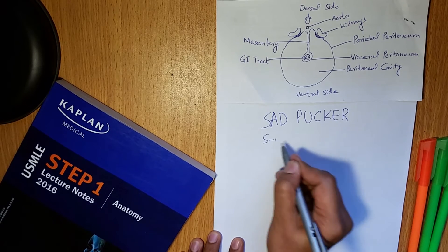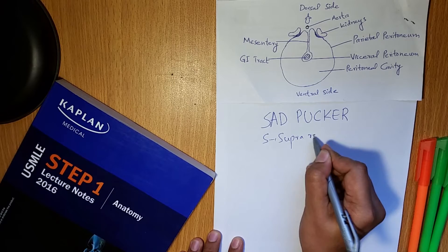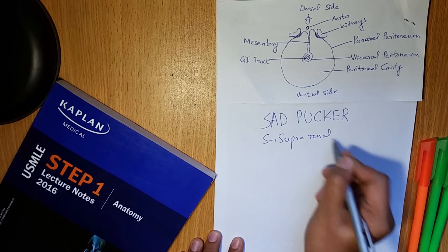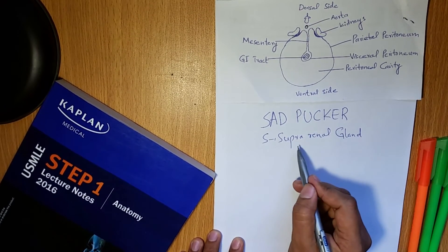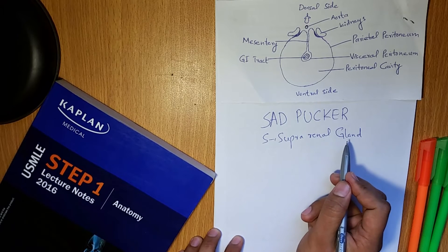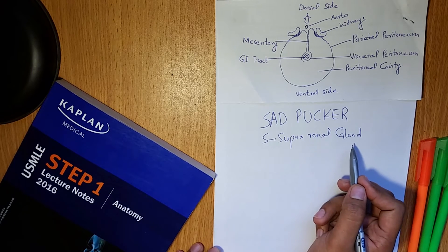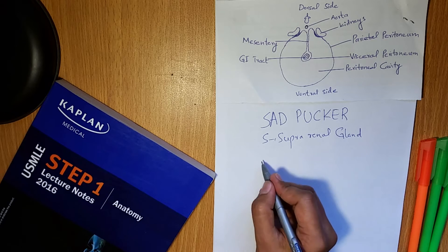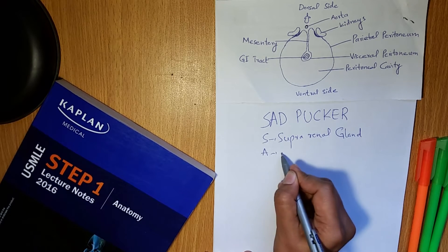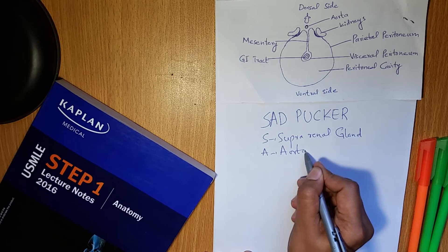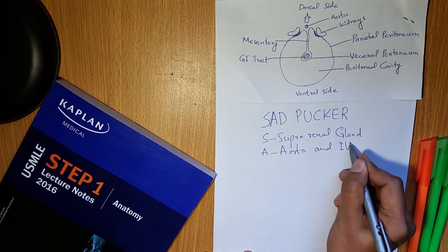S is for suprarenal gland. Suprarenal glands are also known as adrenal glands, which are present on the superior pole of the kidney. A is for aorta and inferior vena cava.